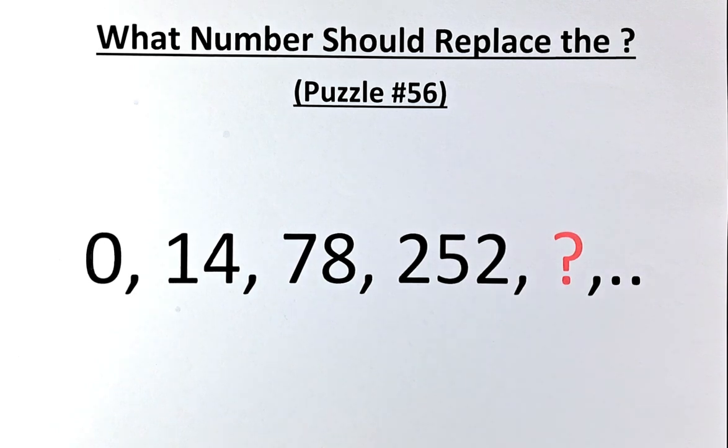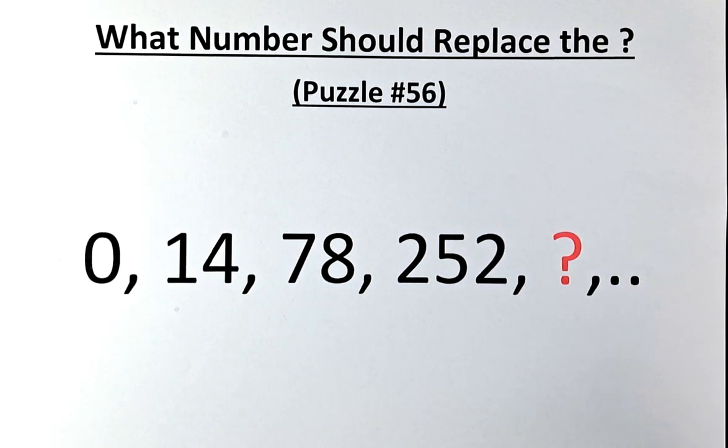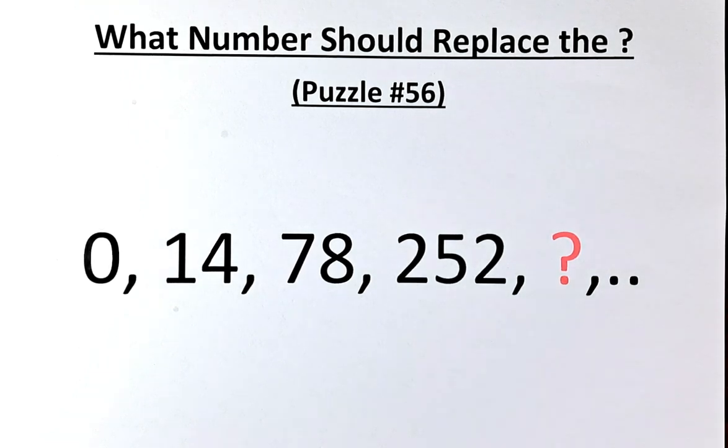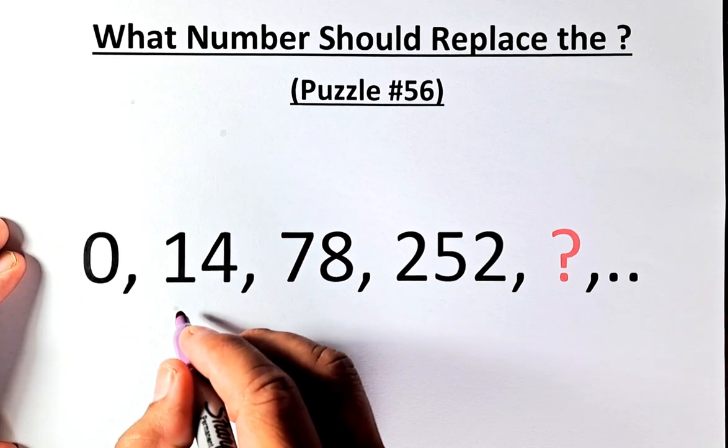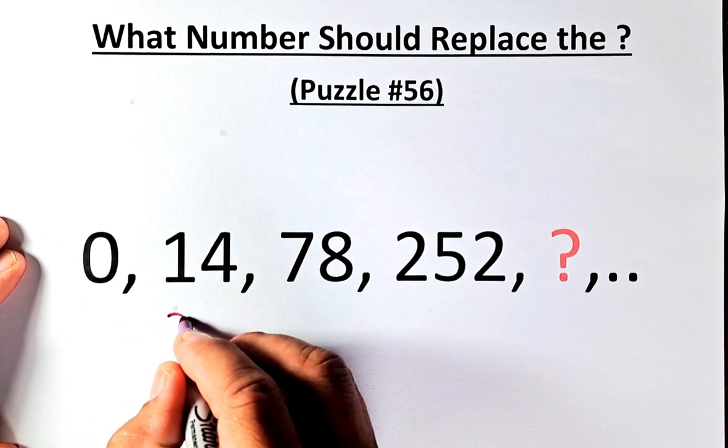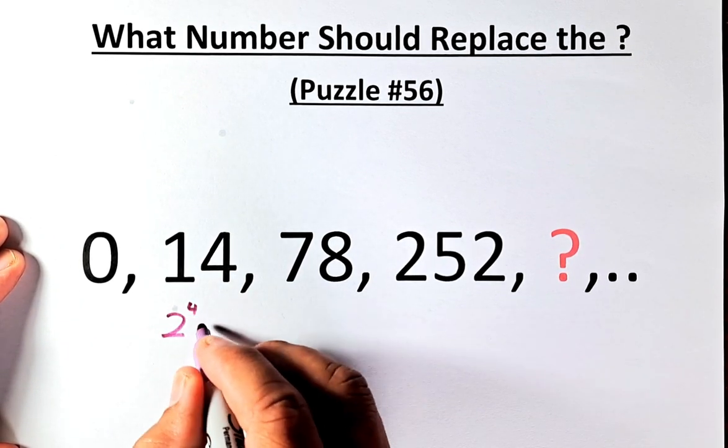So before we start let's think how you get 0 to 14, 14 to 78, 78 to 252. It's a big jump and this is how we solve. We'll leave 0 for a while.